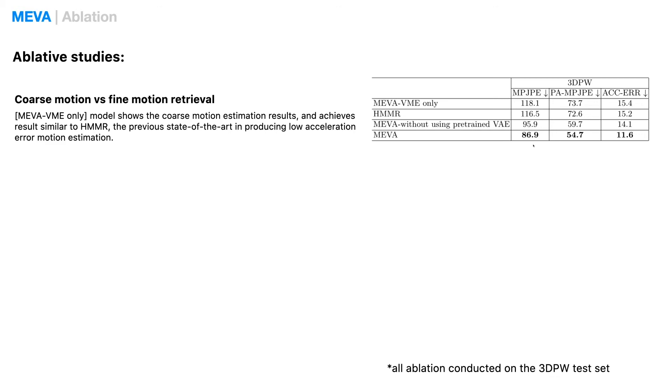Here, the MEVA VAE-only model shows the result of the coarse motion estimation and achieves competitive MPJPE as the previous state-of-the-art method with the best acceleration error.